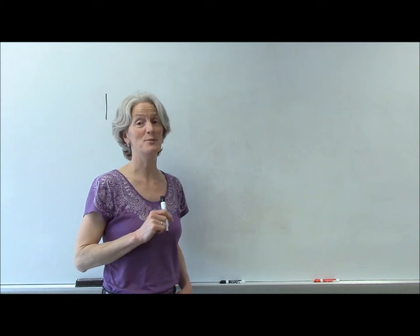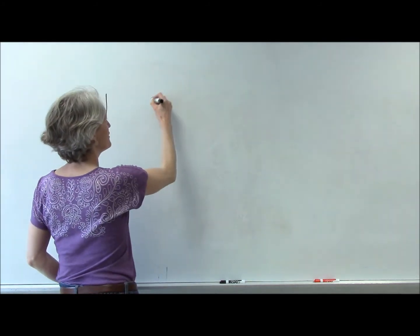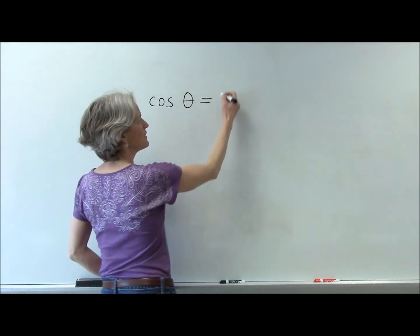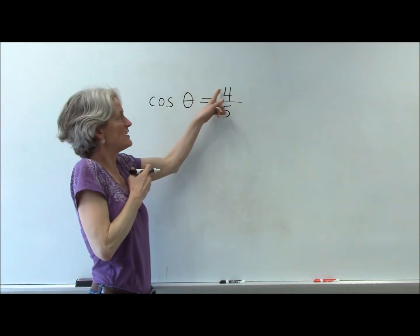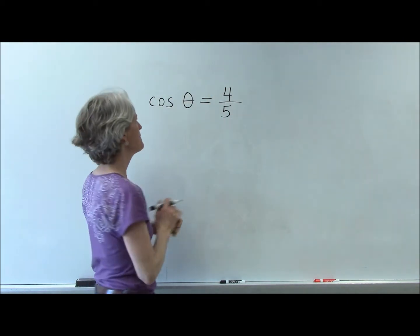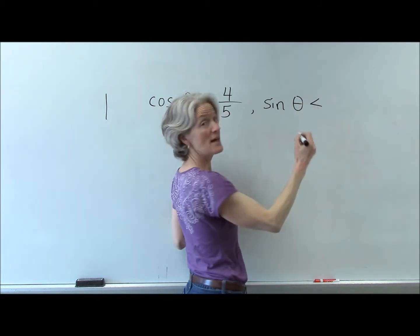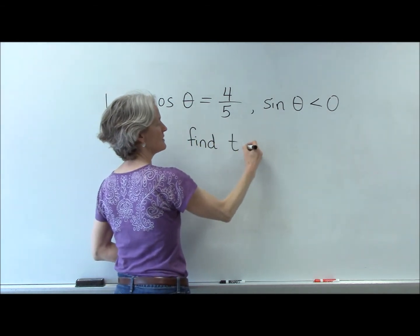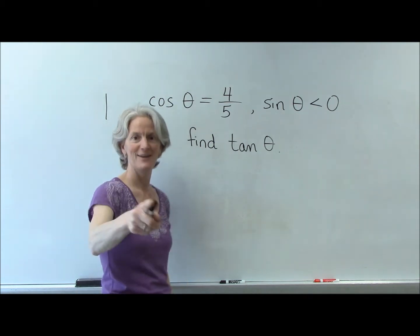I'm going to make you folks at home do some work. I'm going to give you some clues, and I want you to use those clues to find what I'm asking for. For example, I'm going to tell you that there is some angle in some quadrant whose cosine is 4 over 5. Remember, cosine tells me the ratio between the adjacent side over the hypotenuse, or x over the hypotenuse. I'm also going to tell you that the sine of the same theta is less than 0, and I want you to find the tangent of that same angle.